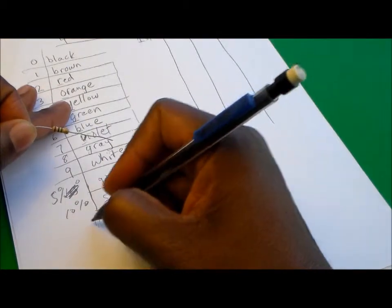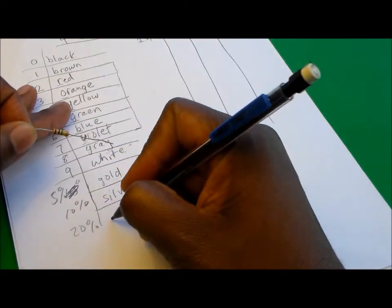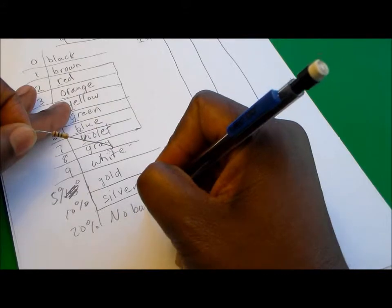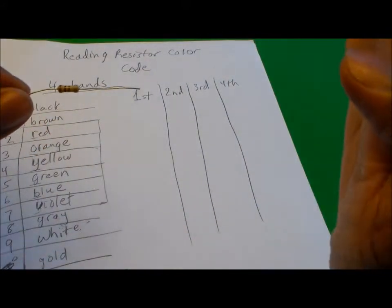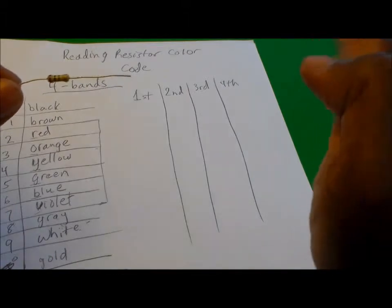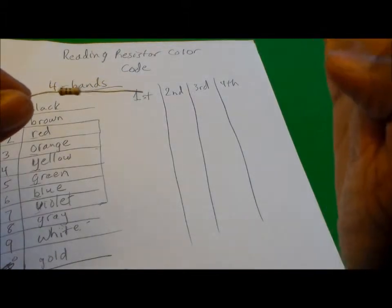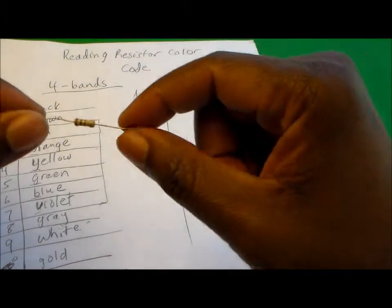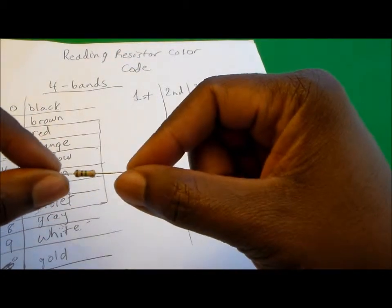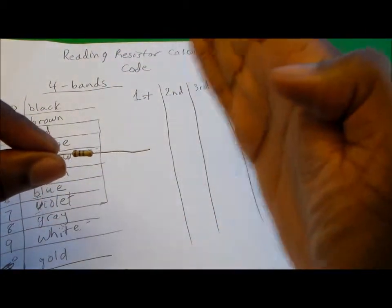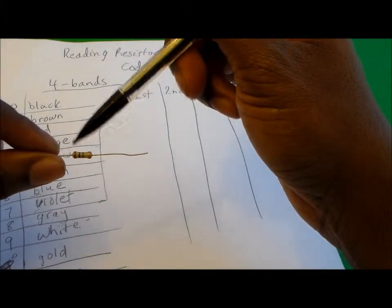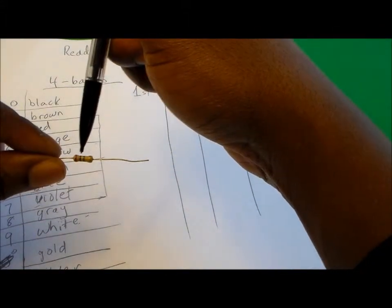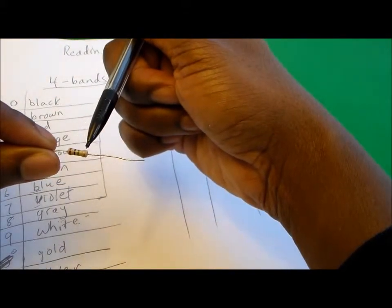You always want to have your gold or silver band, or if you don't see a fourth band then we'll use 20 percent for no band. You always want to begin with your silver, gold, or no third band on your right side when you're reading the colors, and then you're going to start from the left band and go over to the right.